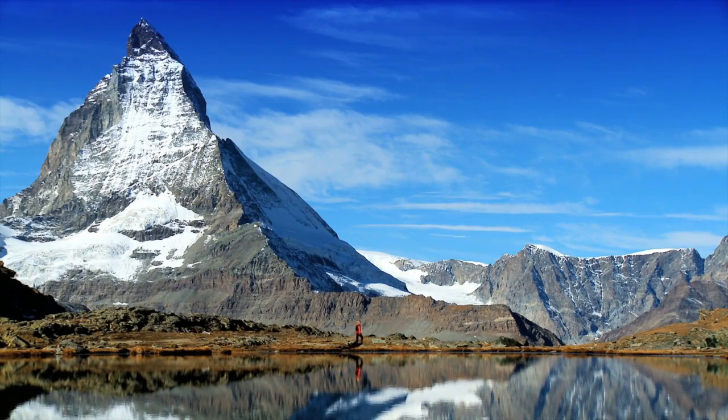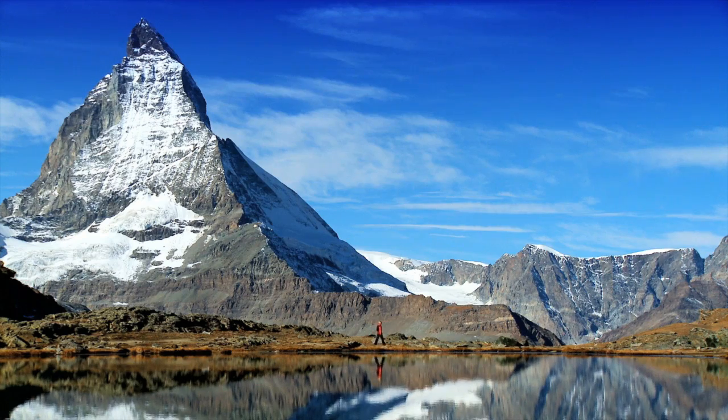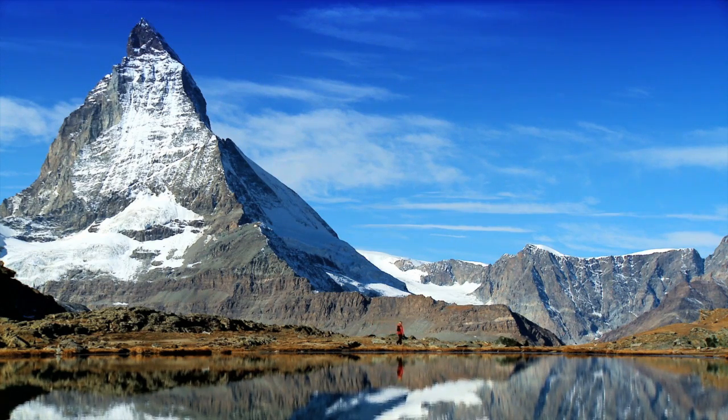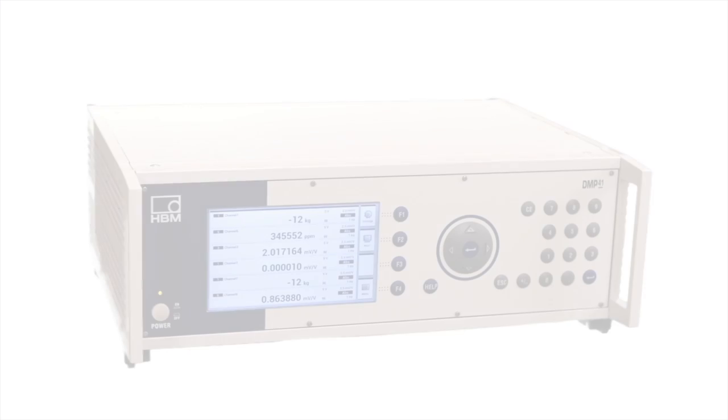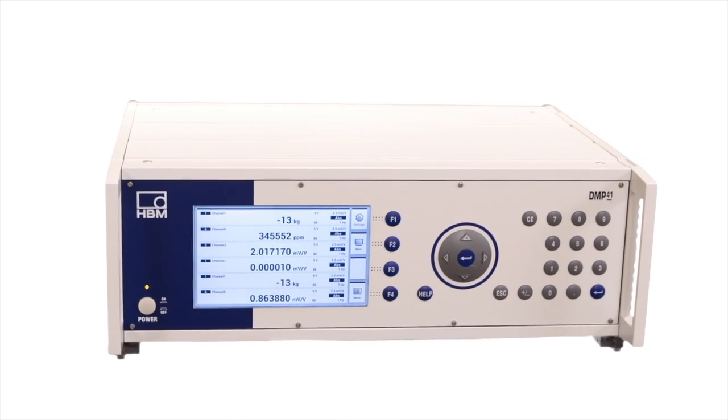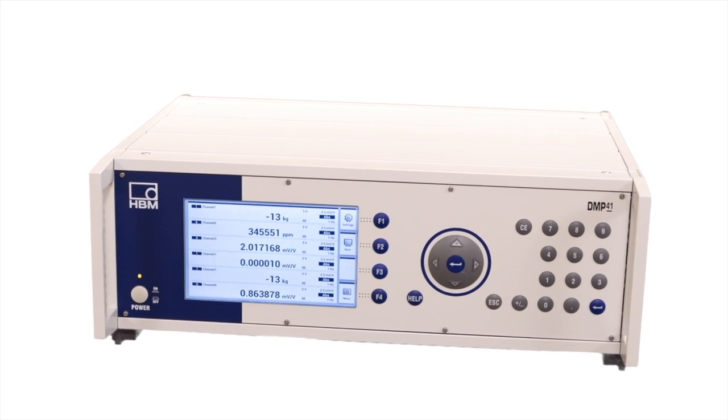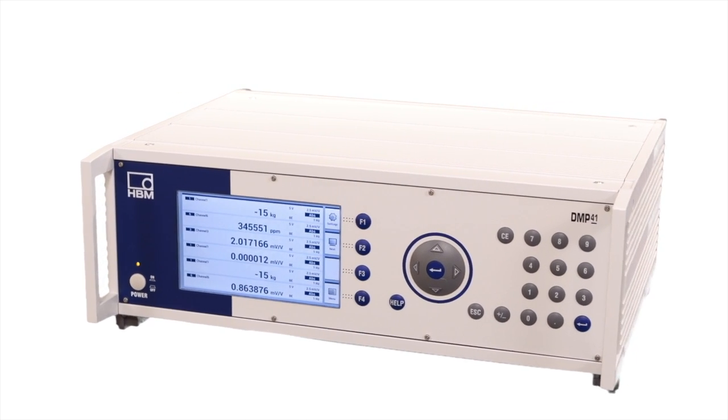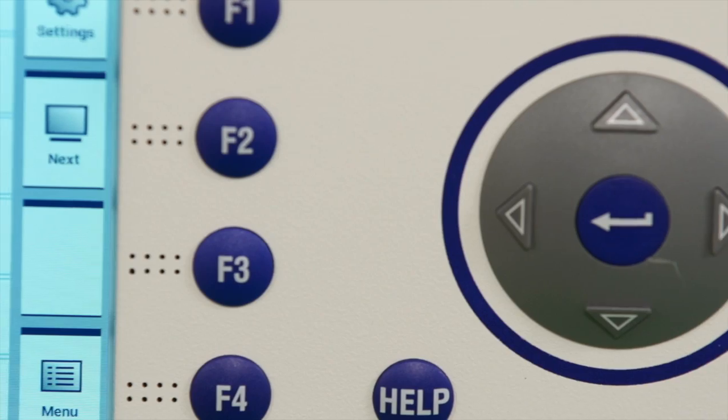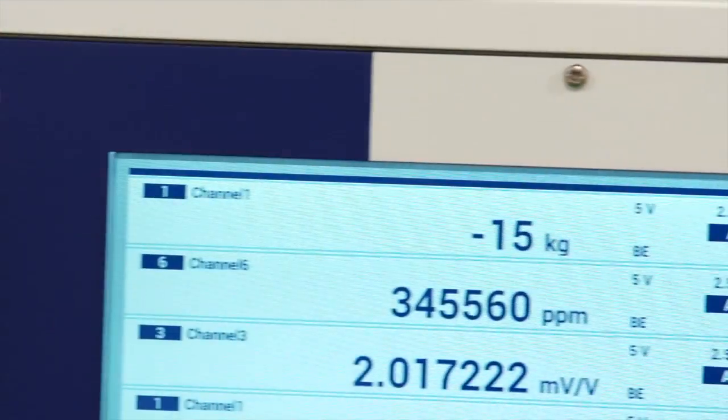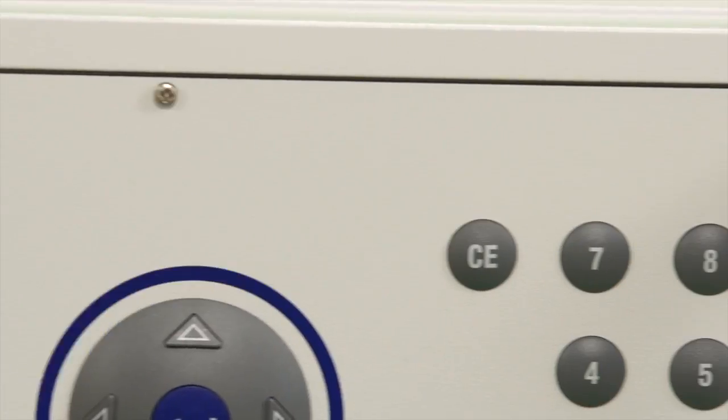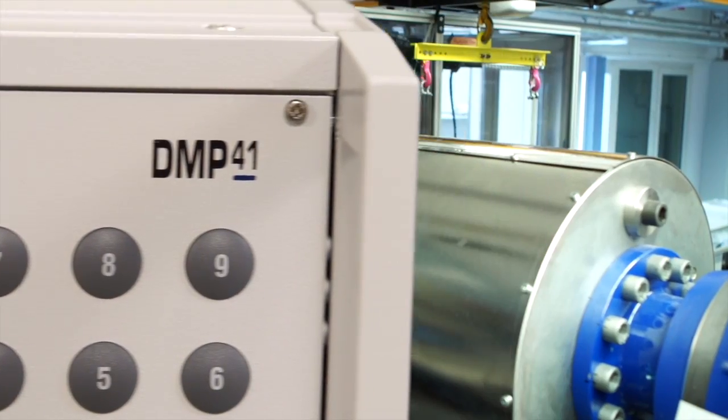Precision at its peak: test and measurement technology that pushes the limits of physical possibilities. DMP 41 is the world's most precise strain gauge-based measuring amplifier. Its resolution of 0.0005 allows for extremely accurate measurements.